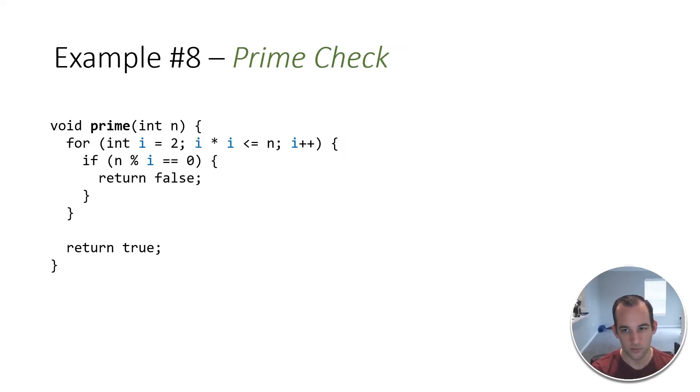This one is we're doing a prime check. So we have a function called prime. And we're just giving it some number as the argument, some primitive int number. All right. So inside of here, there's a for loop. And then we're checking if that number, so let's do one run through. Let's say n equals 8.